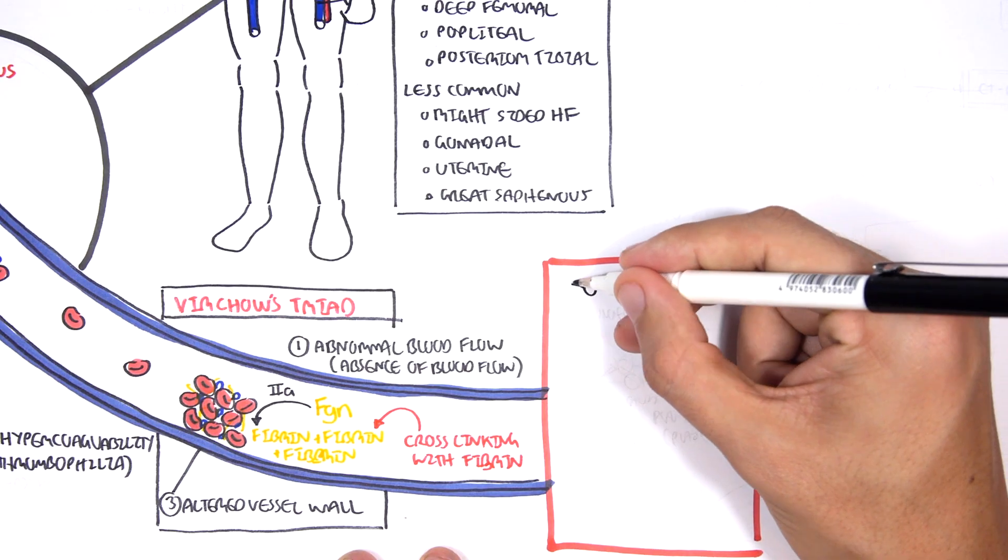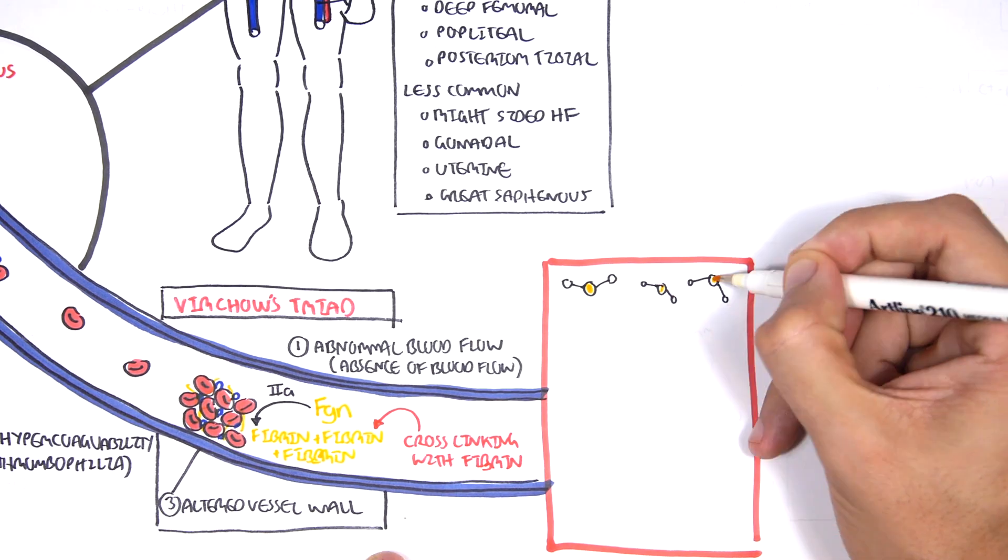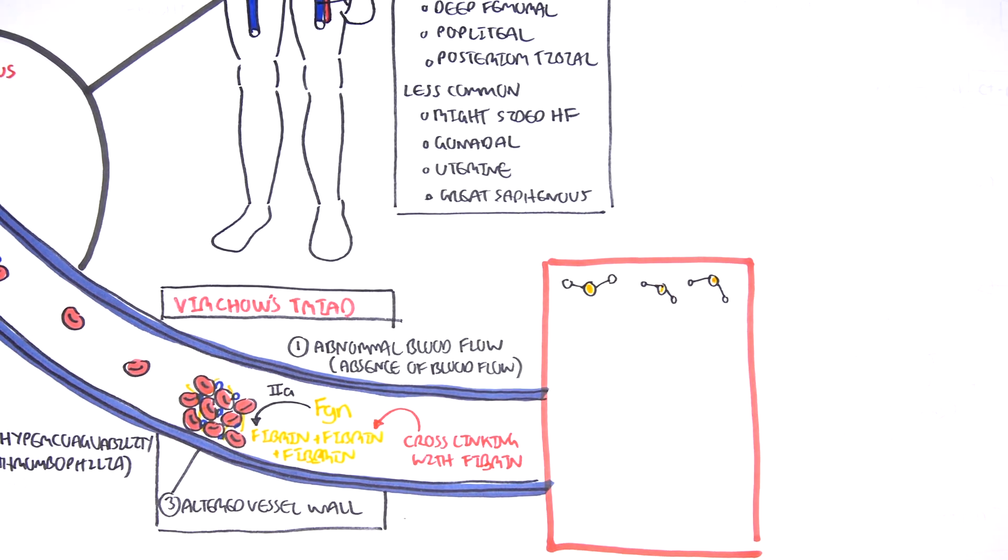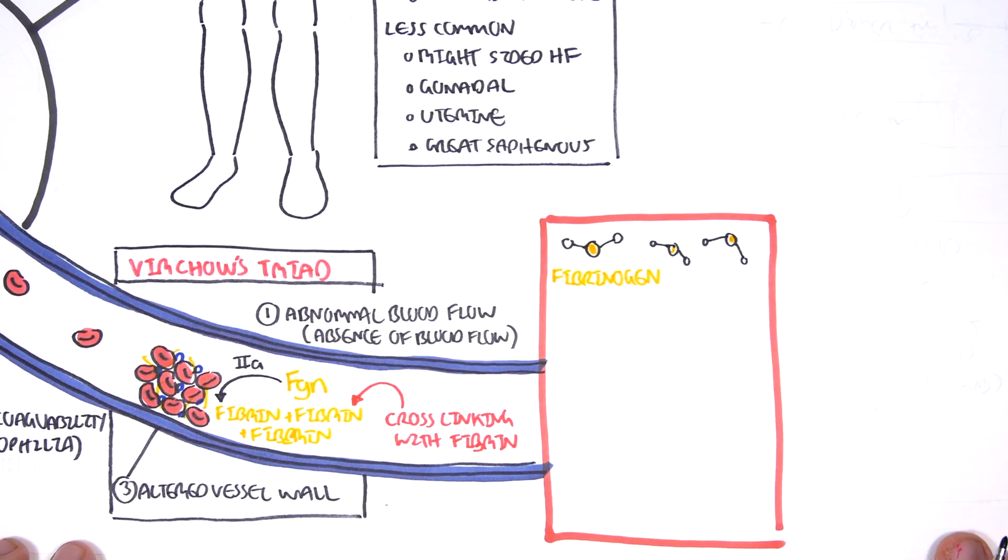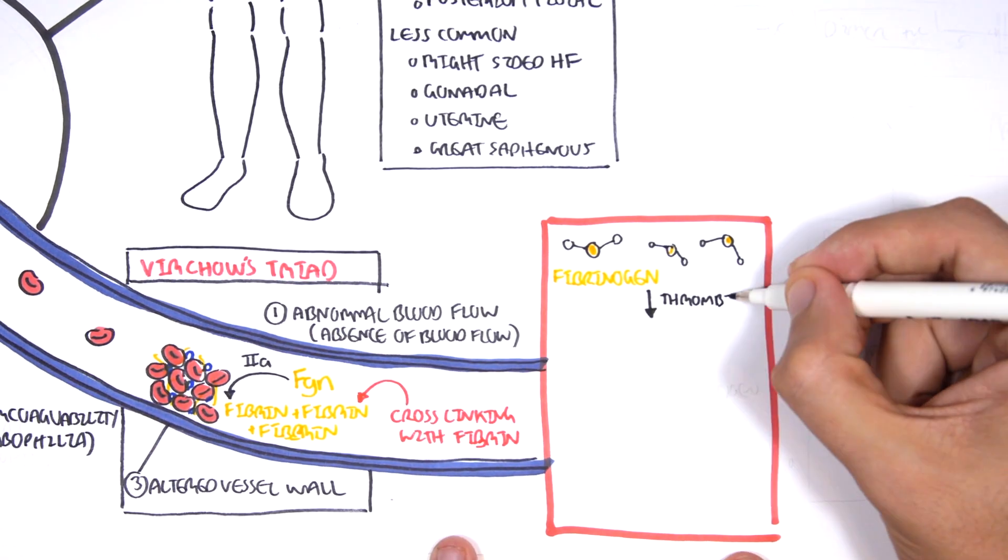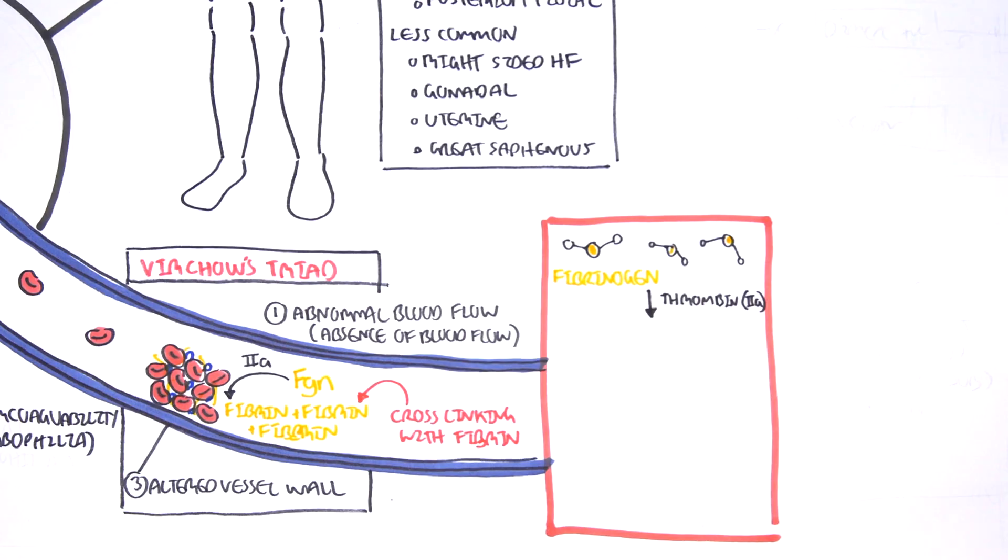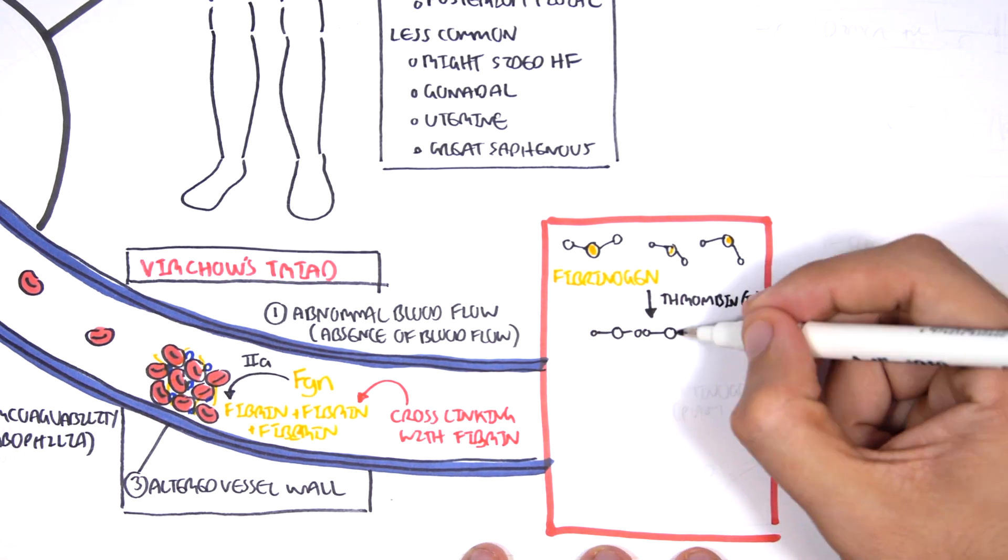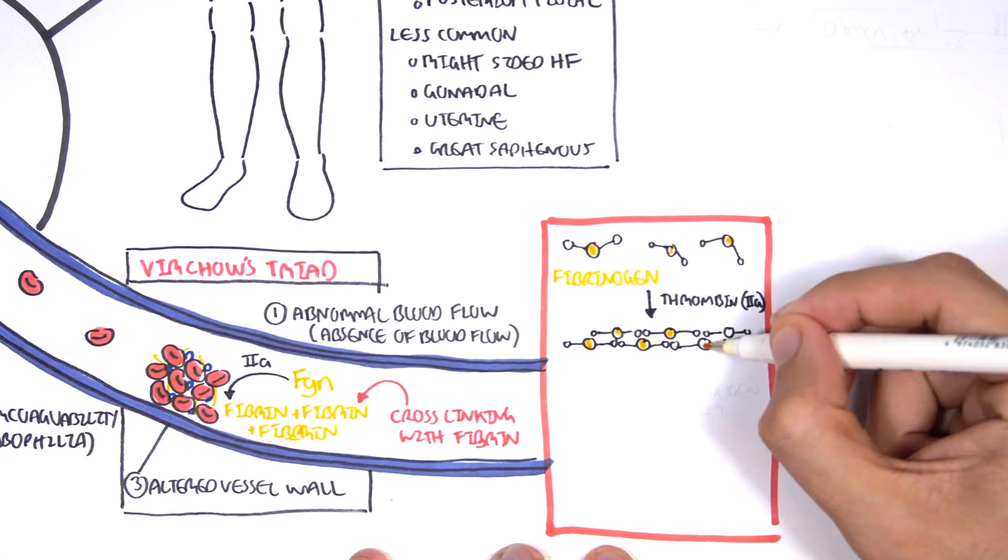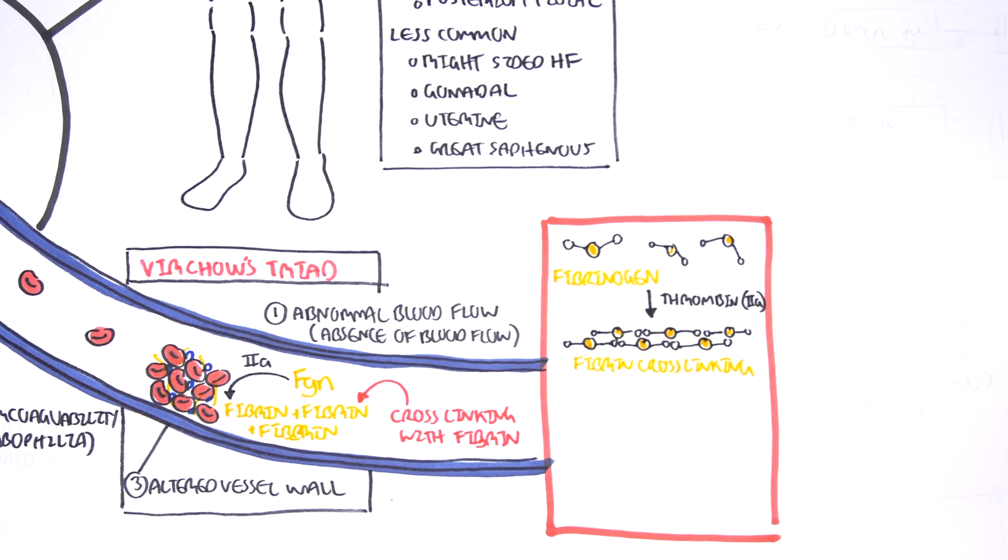So here we have fibrinogen. Fibrinogen is essentially this yellow part, it has segments on the outside of these white things that are called the D-segments. Now in the presence of thrombin, which is clotting factor 2a, fibrinogen becomes fibrin. And these fibrin will essentially link together with their D-segments, it will form cross-links. So you get a fibrin cross-linking.